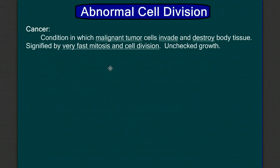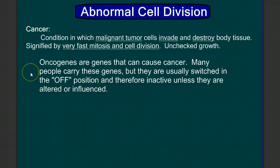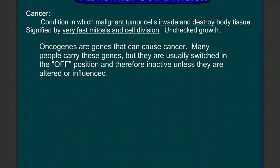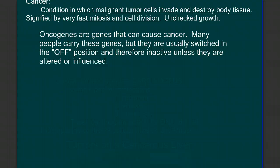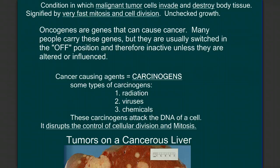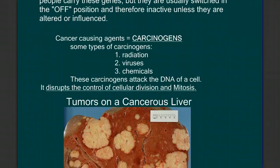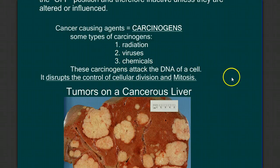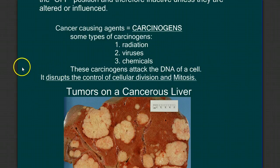These cells have lost their ability to recognize the signals that tell them not to divide. It's interesting that we have genes called oncogenes, which are genes that can cause cancer. Many people carry these genes, but usually they're switched to the off position and are inactive unless they're altered or influenced. Some of the things that can alter or influence these genes and cause cancer are what we call carcinogens — things like radiation, x-rays, even exposure to sunlight. Viruses can be cancer-causing and can switch on oncogenes. And many various chemicals can act as carcinogens, attacking and damaging the DNA of the cell, which disrupts this control of cellular division and mitosis.